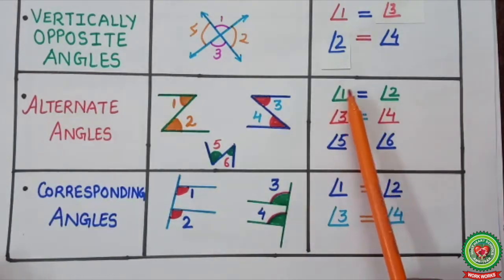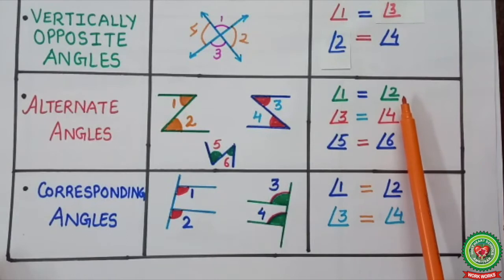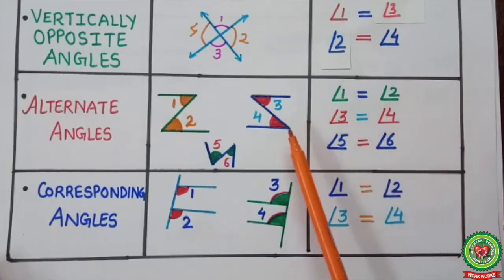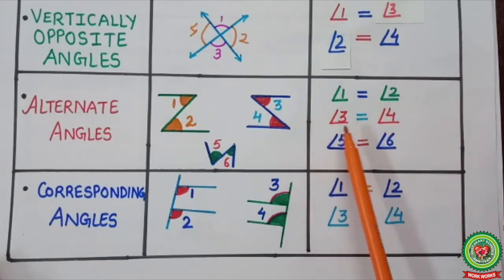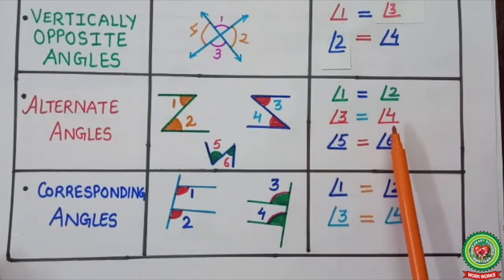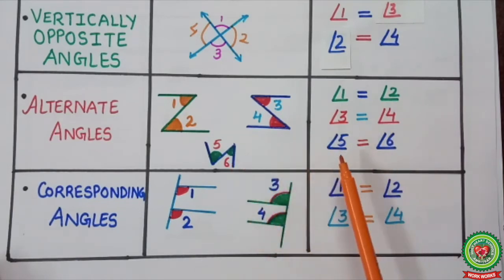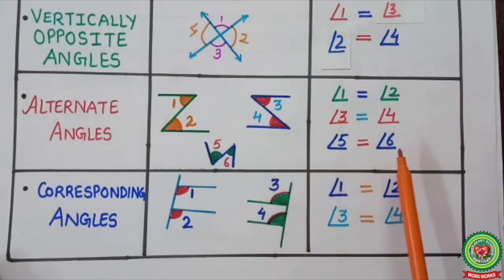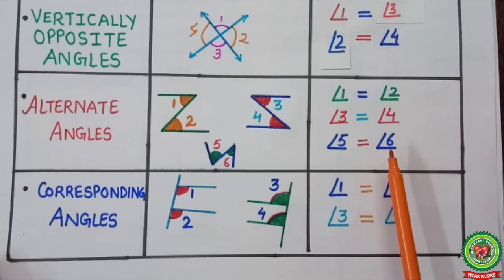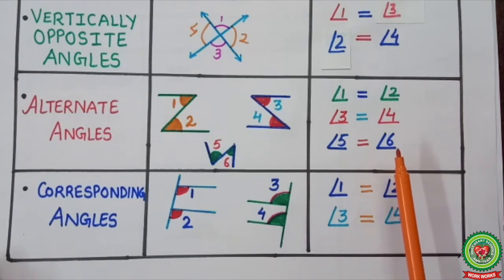Therefore, angle one equals angle two, angle three equals angle four, and angle five equals angle six.